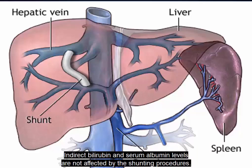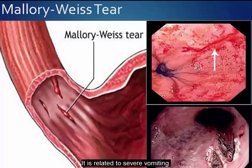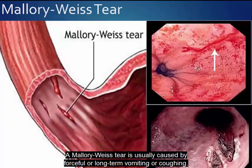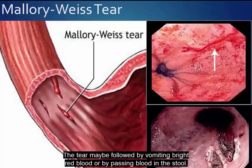Indirect bilirubin and serum albumin levels are not affected by the shunting procedures. A Mallory-Weiss tear is a tear in the mucosa near the esophagogastric junction, related to severe vomiting. It is usually caused by forceful or long-term vomiting or coughing, and may also be caused by epileptic convulsions. The tear may be followed by vomiting bright red blood or by passing blood in the stool.